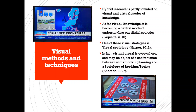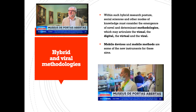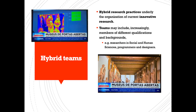Visual methods and techniques. Hybrid research is partly founded on visual and virtual modes of knowledge. Visual knowledge is becoming a central mode of understanding our digital societies — one of these visual strategies is visual sociology. Virtual visual is everywhere and may be the object of a confrontation between social looking and seeing and a sociology of looking and seeing. Within such hybrid research posture, social sciences and other modes of knowledge must consider the emergence of novel methodologies that may articulate the visual, the digital, the virtual, and the viral. Mobile devices and mobile methods are some of the new instruments for these aims. Hybrid research teams may include, increasingly, members of different qualifications and backgrounds, such as researchers in social and human sciences, programmers, and designers.